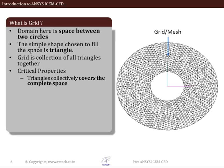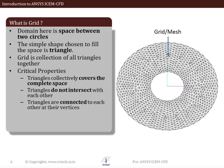The generated grid should have critical properties. First, all triangles should collectively fill the complete domain with no unmeshed regions. Second, none of the triangles should intersect with each other. All triangles should be connected to their neighbors at their vertices. If you observe the grid generated for the region between two concentric circles, you can notice it follows all these critical properties.